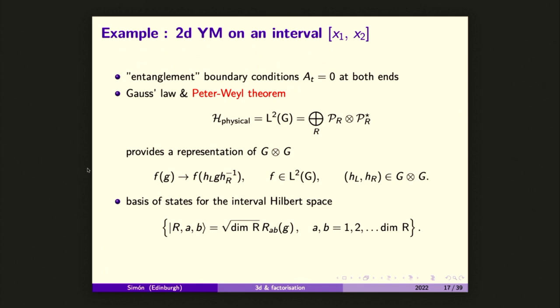What I'm planning to do is use the so-called extended phase space Hilbert space formalism. But I felt I needed to motivate why this is useful. Since I'm interested in ending up with a wormhole — which means I have two endpoints — let's consider 2D Yang-Mills on an interval. Think of the interval as a toy model for the wormhole that will be coming in a few minutes.